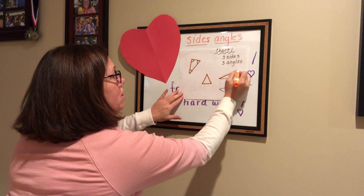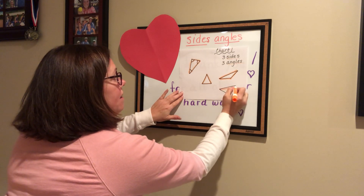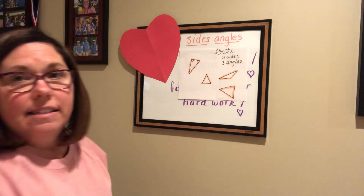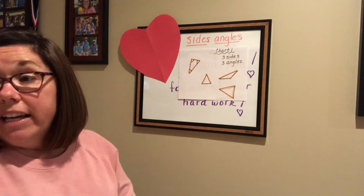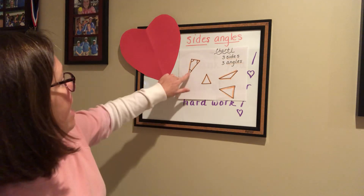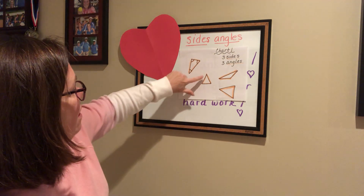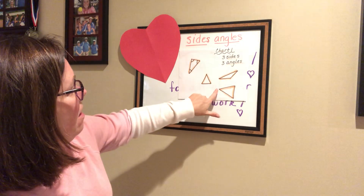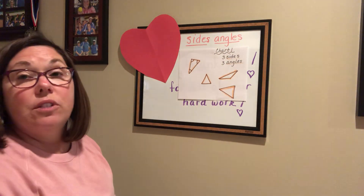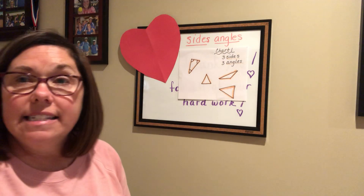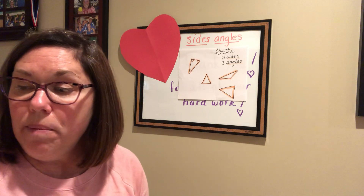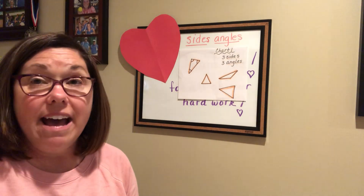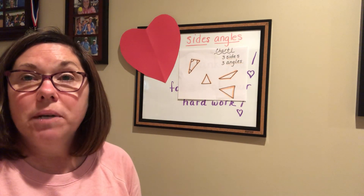This one has one, two, three sides. And this has one, two, three sides. Now I can go back in and count the angles — that's where the sides meet. One, two, three. One, two, three. One, two, three. Those all have three sides and three angles. Okay, can you get a piece of paper? Can you draw me three objects that have three sides and three angles?